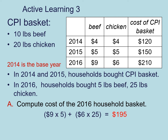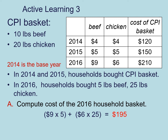To compute the cost of the 2016 household basket, we're going to take the prices from our table — this one for beef and this one for chicken respectively — and then take the numbers for how much beef and how much chicken households bought. That gives us a total expenditure of $195 for the 2016 household basket.